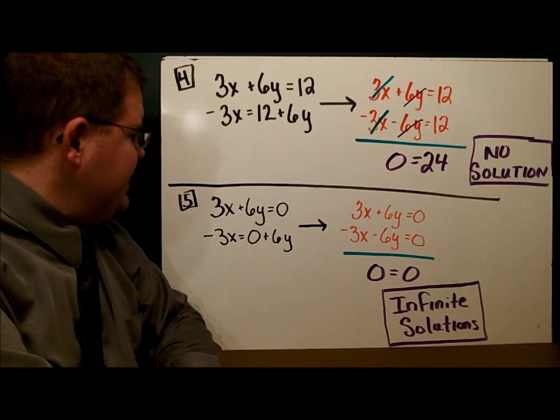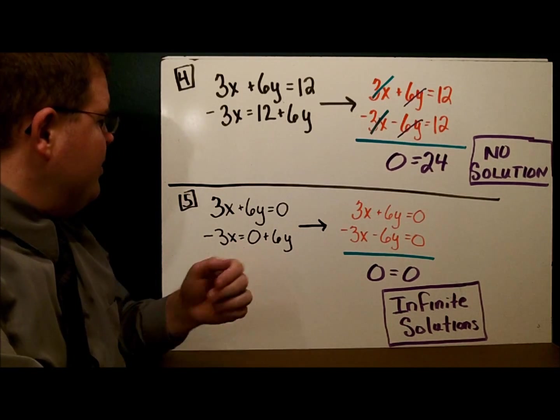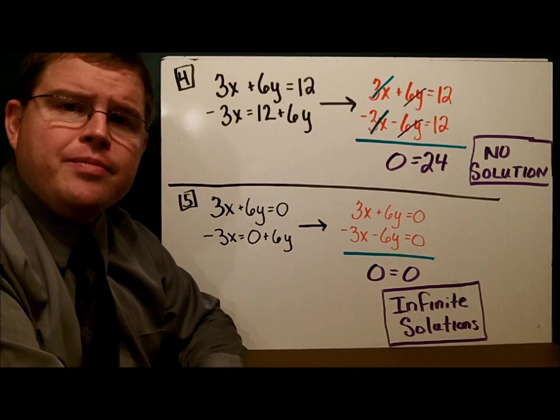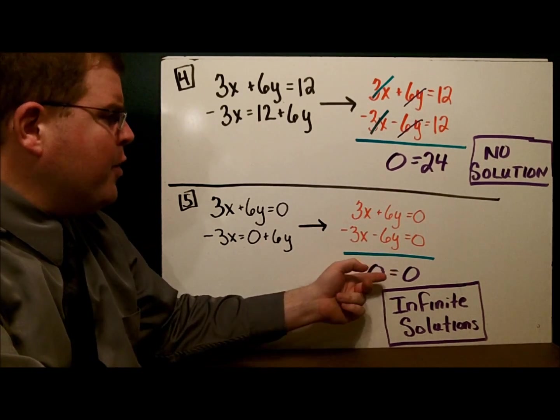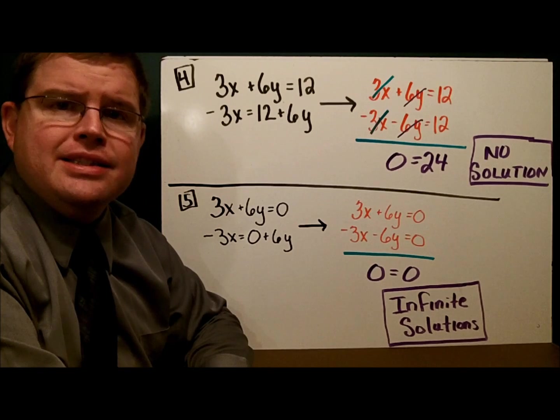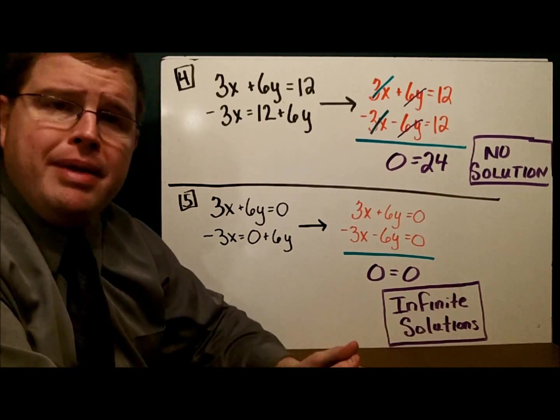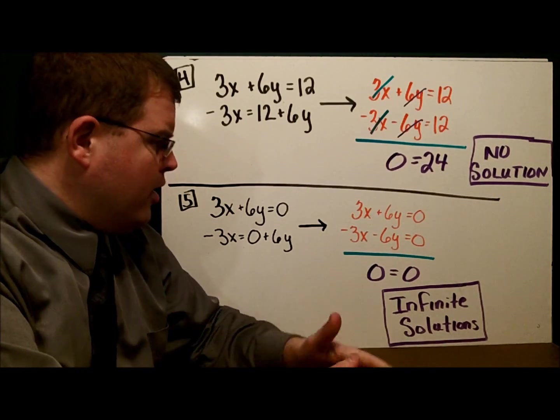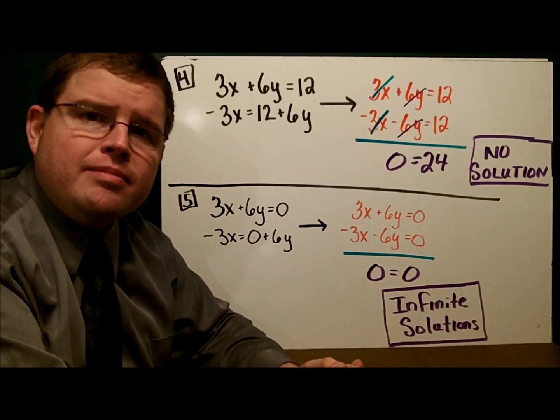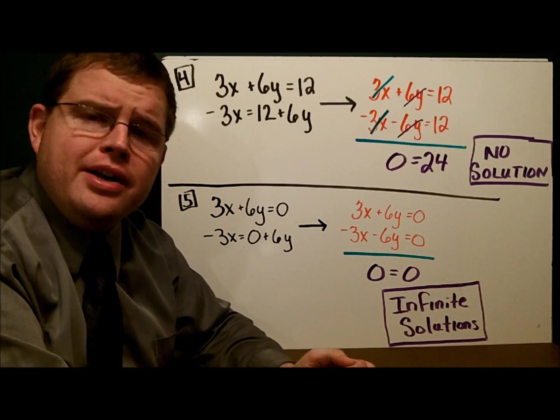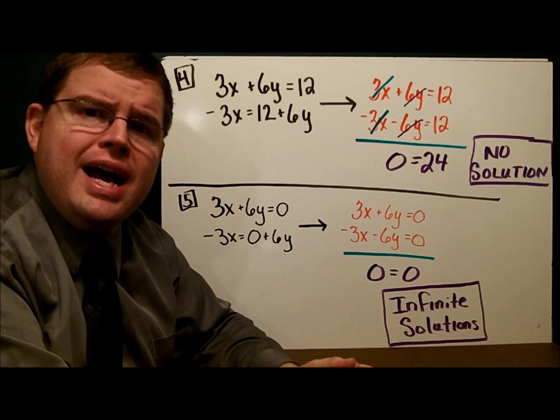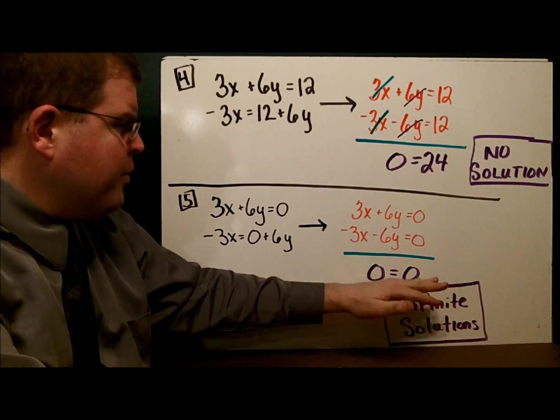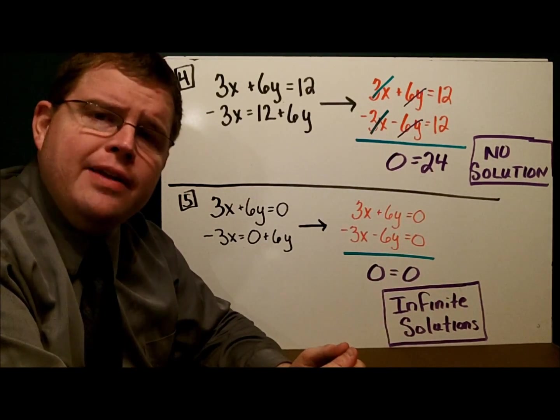Example 5 is very similar. If we get it into standard form, once again, our variables all cancelled out. But this time, what we're left with actually makes sense. 0 equals 0. Because it makes sense, they must be the same line. And therefore, we have an infinite number of solutions. The special cases you run into periodically. It's a good idea to remember, if what you get makes no sense, there's no solution. And if what you get does make sense, there's an infinite number of solutions.